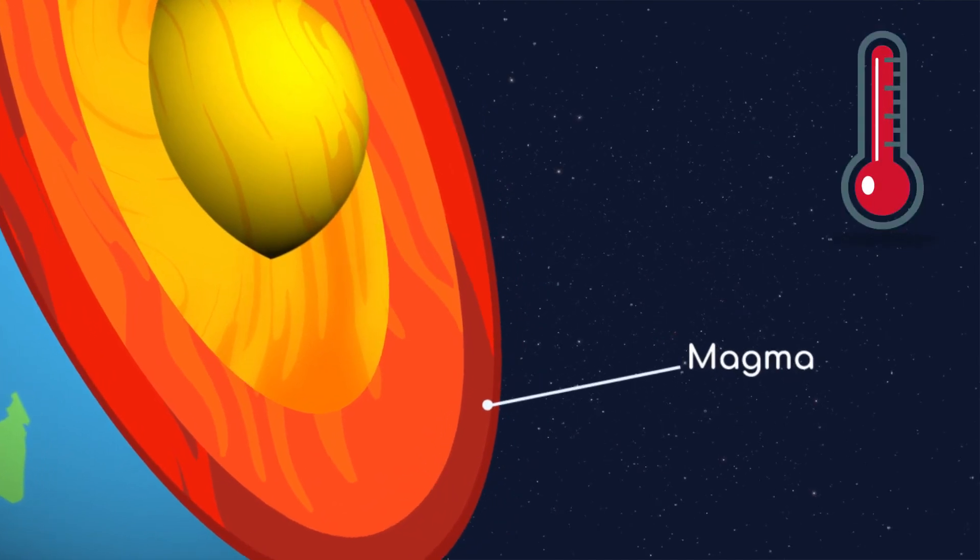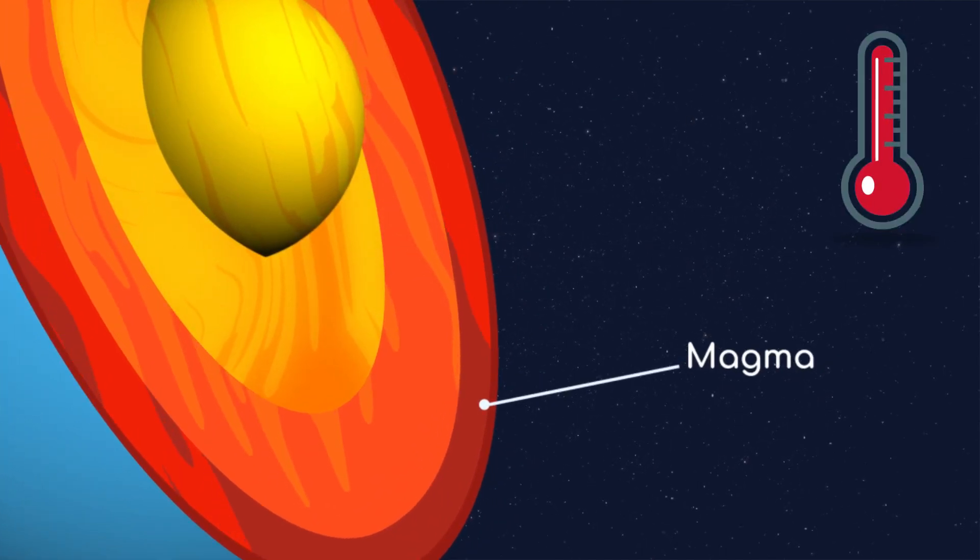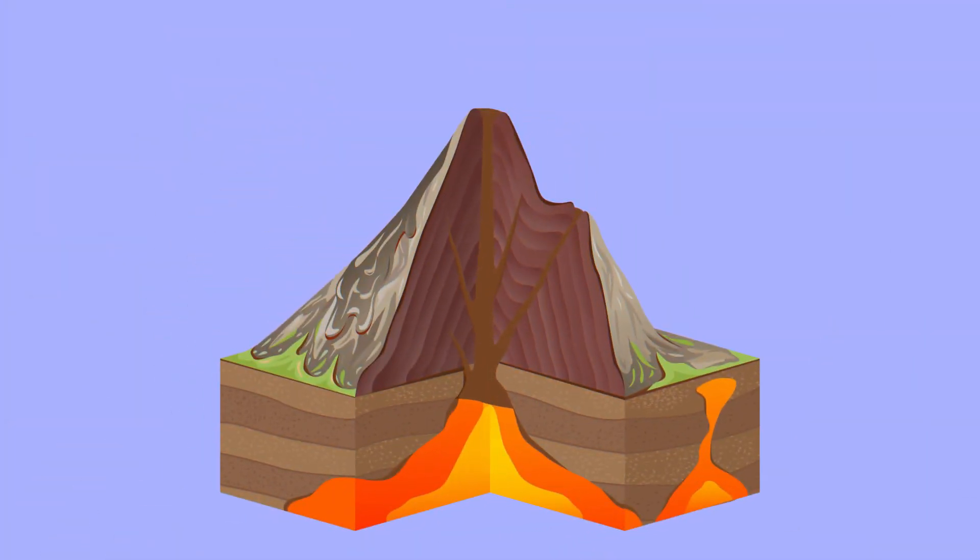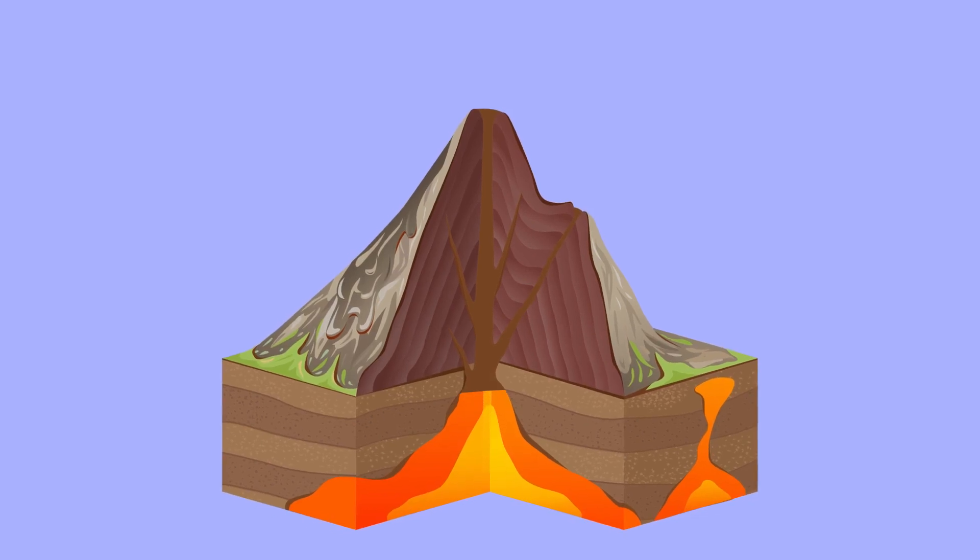This is called the mantle, and the melted rocks are called magma. Sometimes the magma finds a crack in the crust and finds its way to the surface. This creates volcanoes and hot springs.